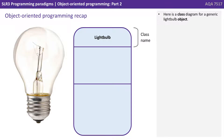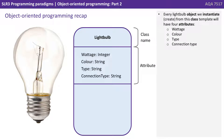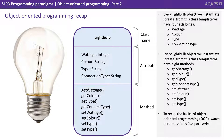Let's have a quick recap of OOP basics from the first video. Here is a class diagram for a generic light bulb object. Each light bulb object we instantiate or create from this class template will have four attributes: wattage, colour, type, and connection type. Every light bulb object we instantiate will have eight methods. If you want to recap the basics of object-orientated programming, please go back and watch the previous video.